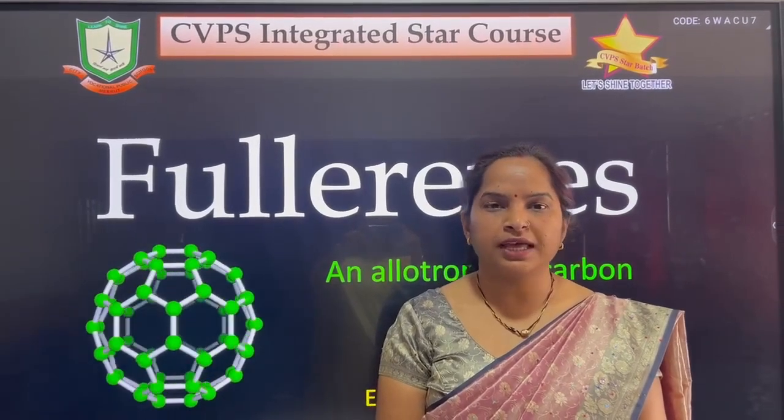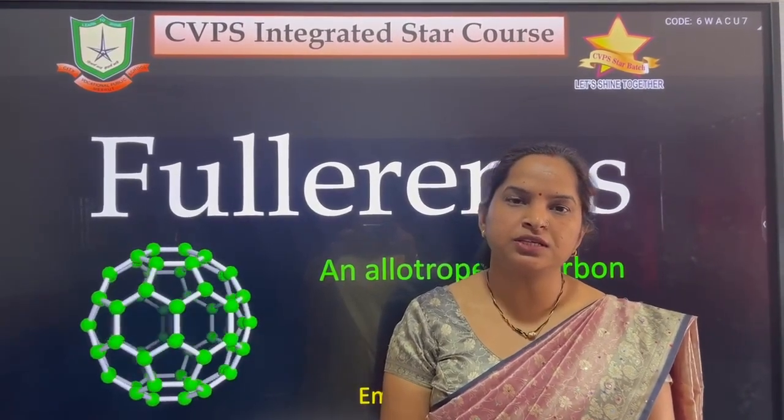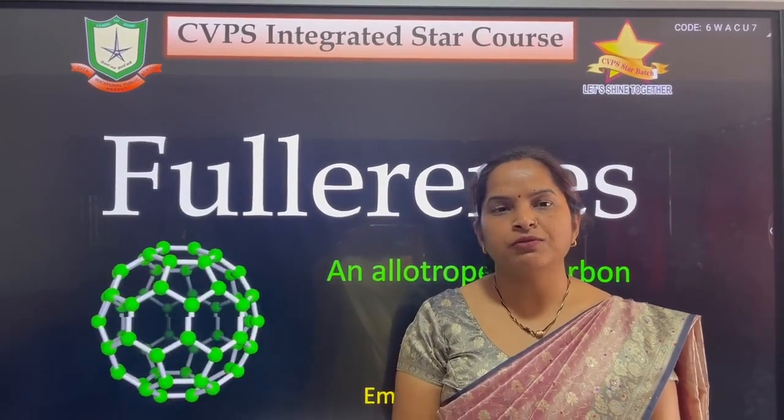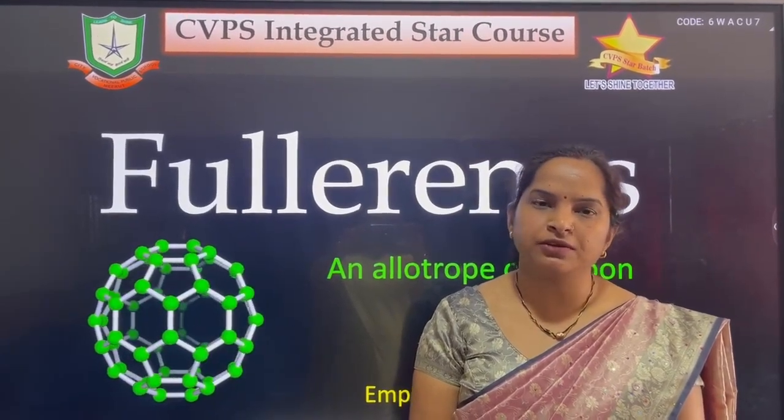Fullerenes consist of only carbon atoms that are connected to each other to form closed or partially closed mesh with fused rings of 5 to 7 carbon atoms.